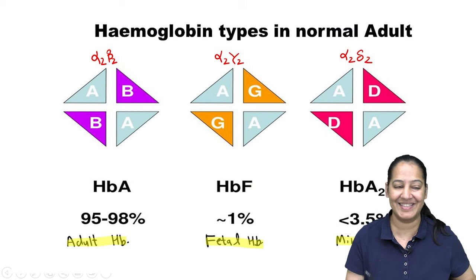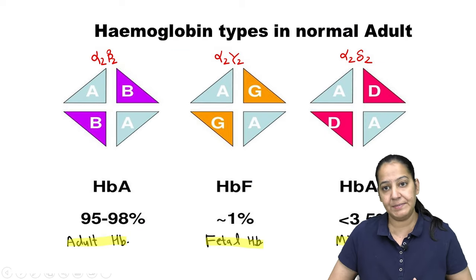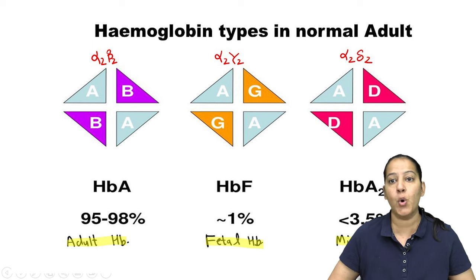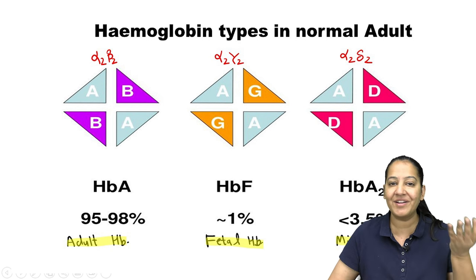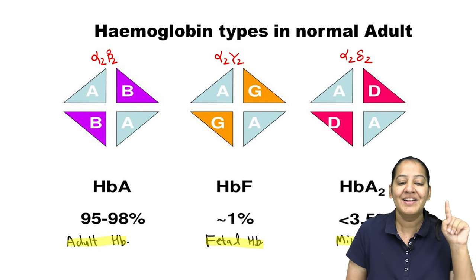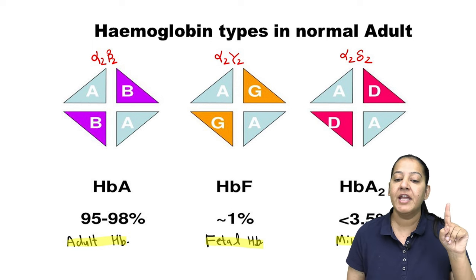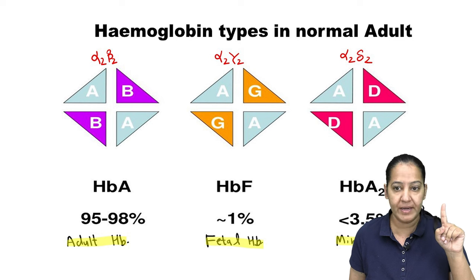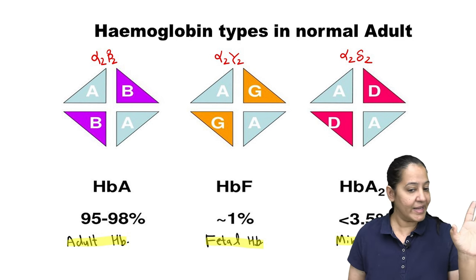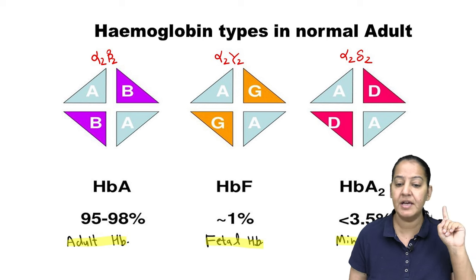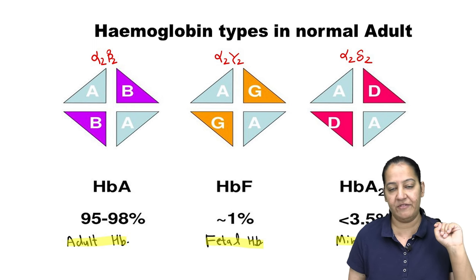To understand thalassemia, you need to understand hemoglobins, because thalassemia is a type of quantitative hemoglobinopathy. Humans have three types of hemoglobin: hemoglobin A (the major hemoglobin, 95–98%), hemoglobin F (the fetal hemoglobin, nearly 1%), and hemoglobin A2 (the minor hemoglobin, less than 3.5%).